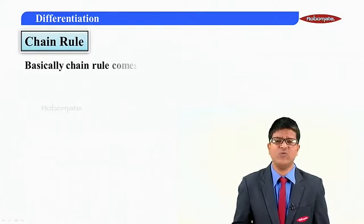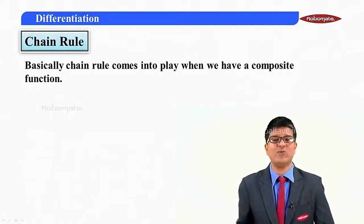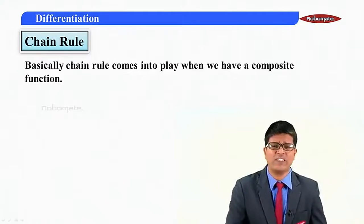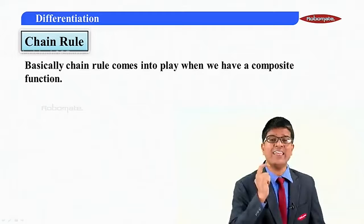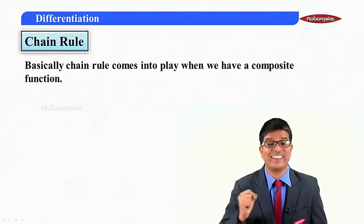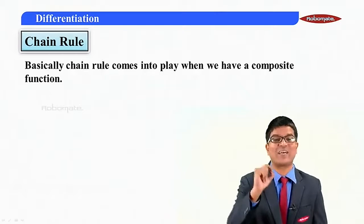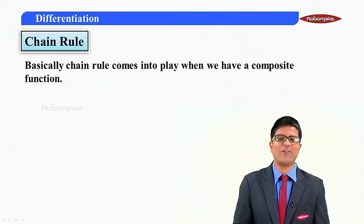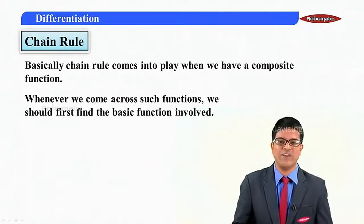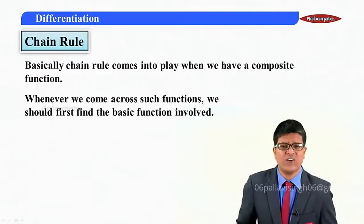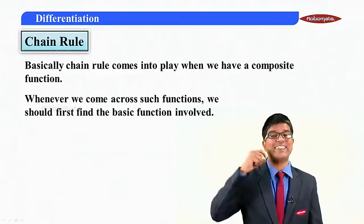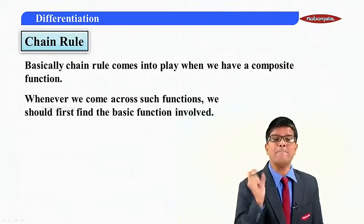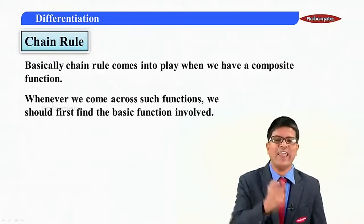Let us understand the chain rule. Basically, the chain rule comes into play when we have a composite function. Any function other than the standard formulas is called a composite function. Whenever we come across such a function, we should first find the basic function — that is, the standard function involved.